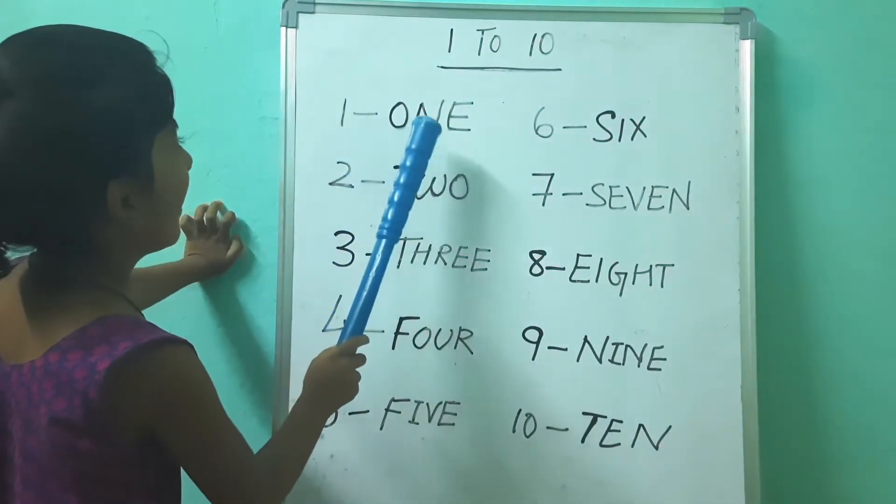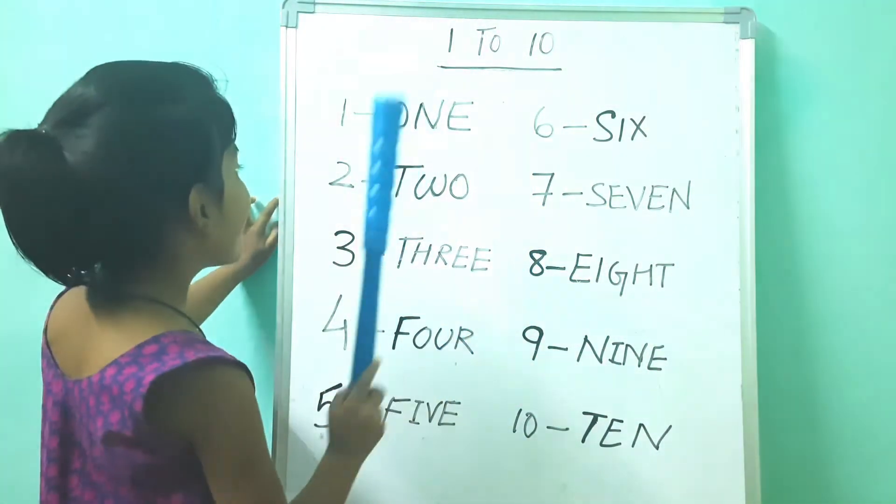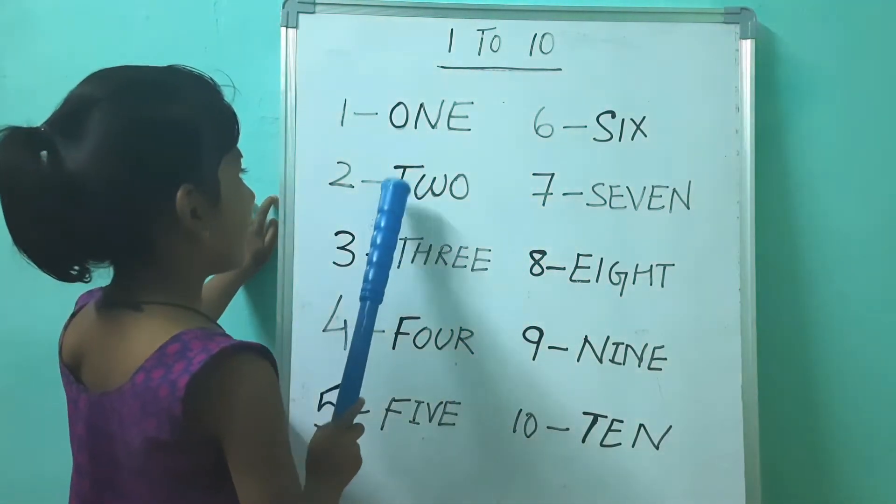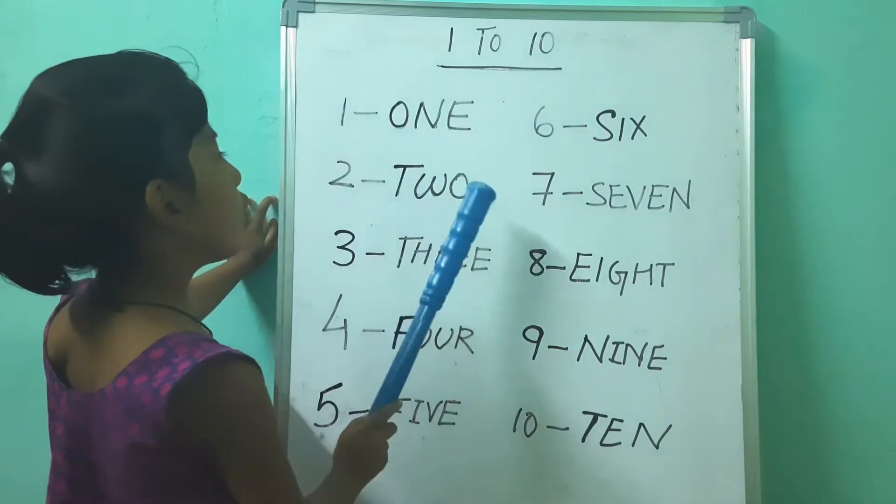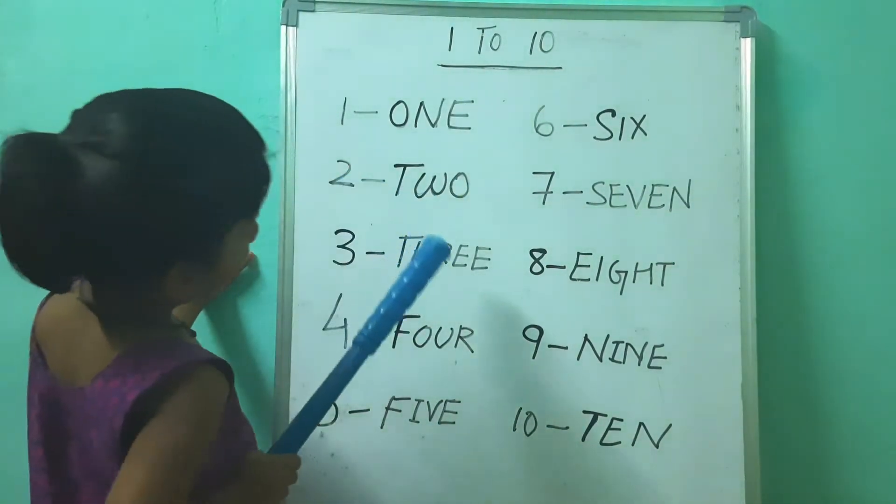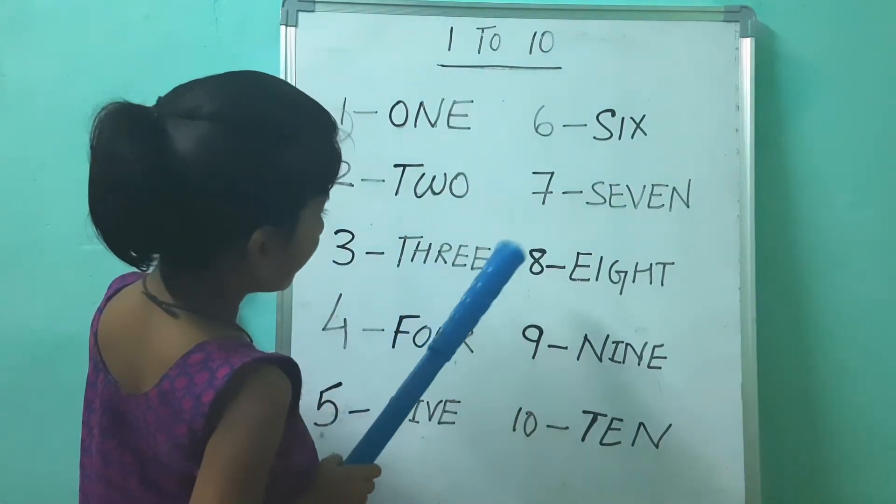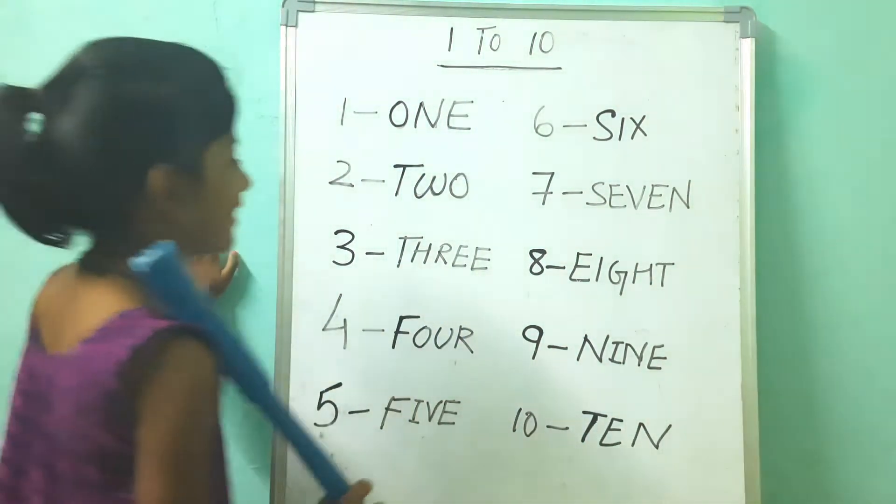One: O, N, E. Two: T, W, O. Three: T, H, R, E, E.